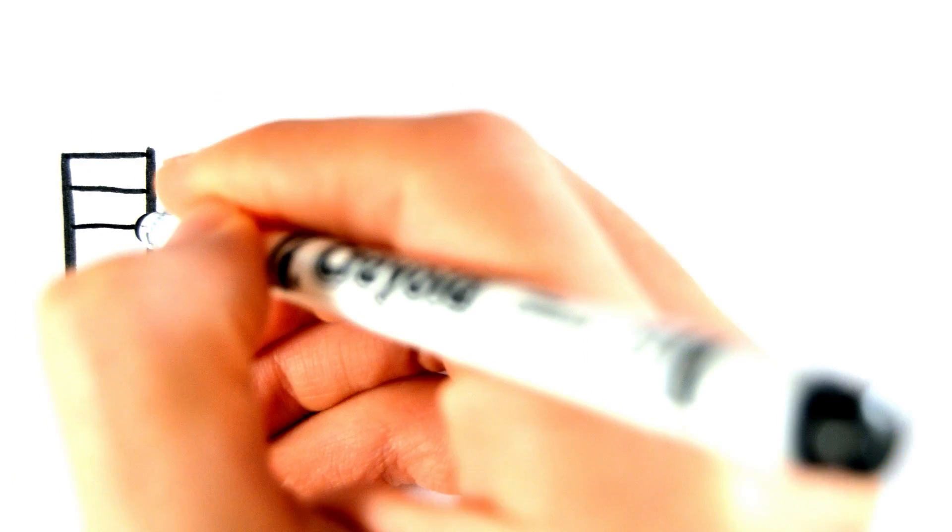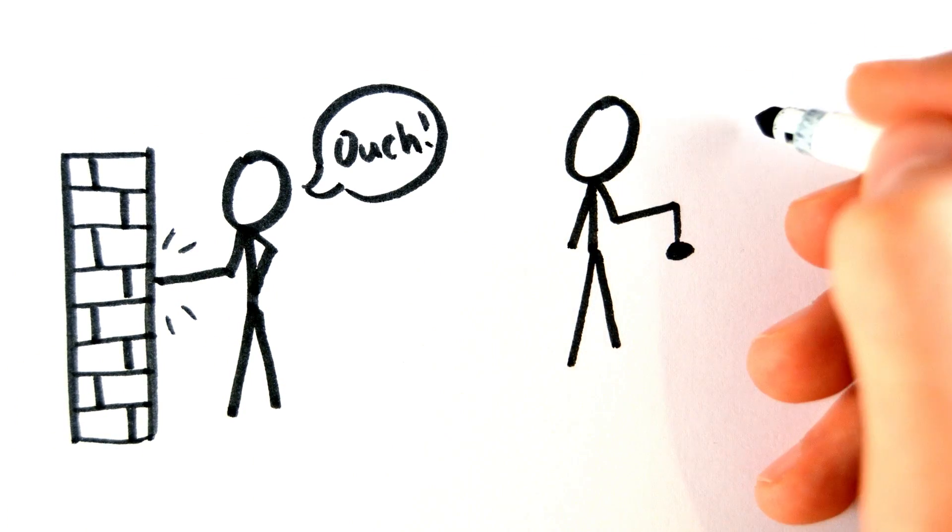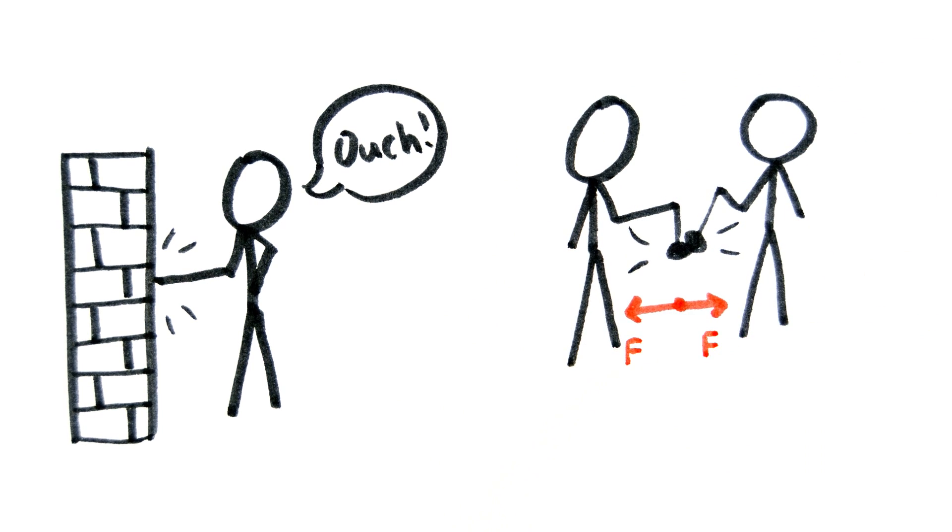This is the reason why your hand hurts when you punch a wall, or why there is no skill in a game of conkers. The force one conker exerts on another will experience the same force exerted on it, so the skill lies only in picking the strongest conker.